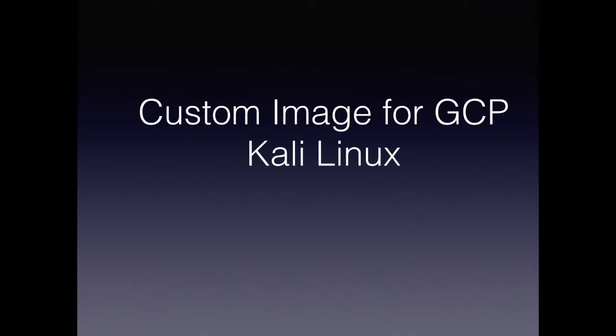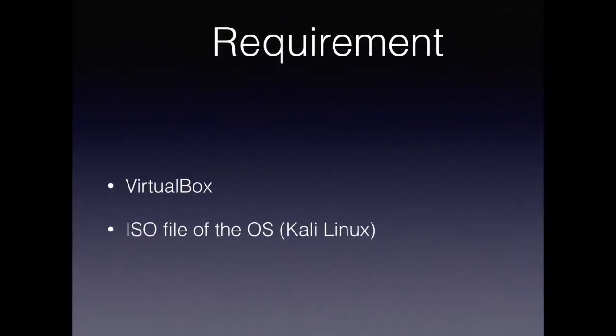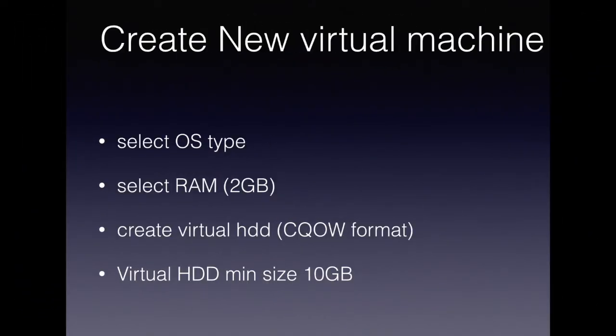As we know, there are no images available of operating systems such as Kali Linux or Blackbox on Google Cloud Platform. To create these images on Google Cloud Platform, firstly you need to identify the requirements. There are only two requirements: first, you need to have VirtualBox with the latest version, and second, an ISO file of an operating system.